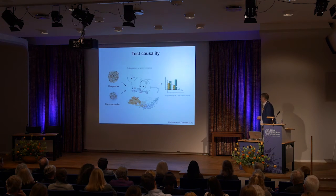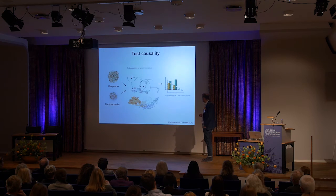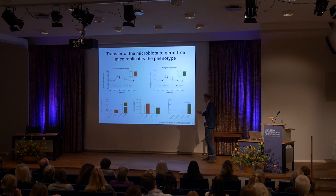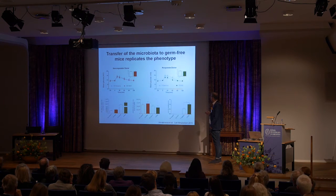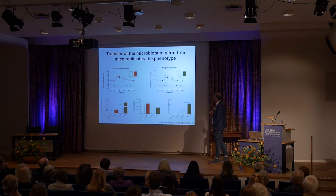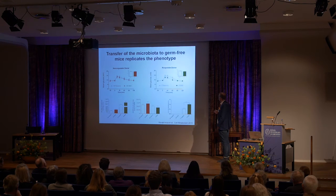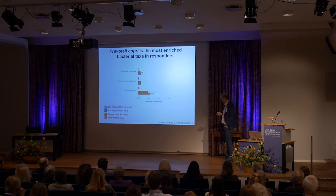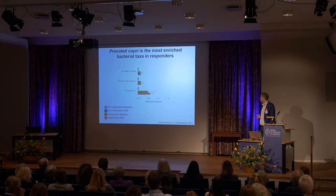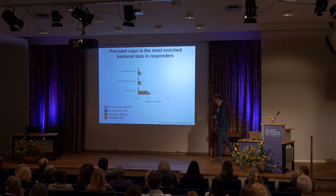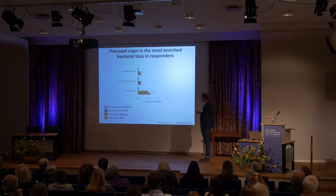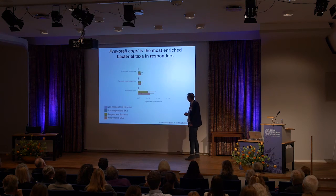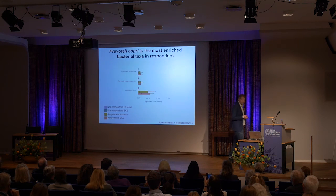Looking at members within Bacteroidetes — the main genera Prevotella and Bacteroides — we noted that responders had a dramatic expansion of the Prevotella-to-Bacteroides ratio compared to non-responders, and there was also a trend toward a higher Prevotella-to-Bacteroides ratio at baseline in responders. To test whether this was important, we transferred non-responder and responder microbiota into germ-free mice before and after barley kernel bread intervention. We found that transferring the responder microbiota after barley kernel bread resulted in improved glucose tolerance in mice compared to baseline samples, which was not seen with non-responder microbiota.